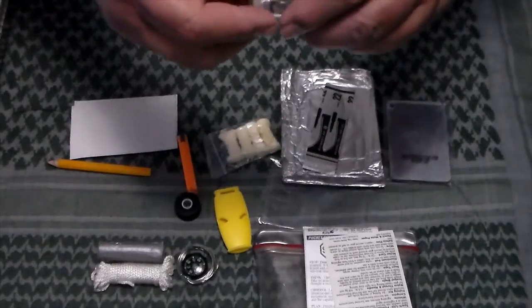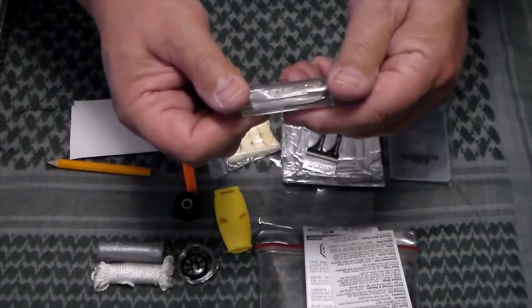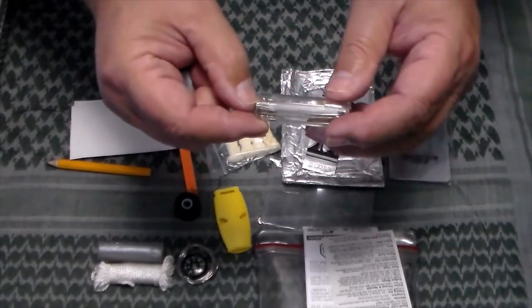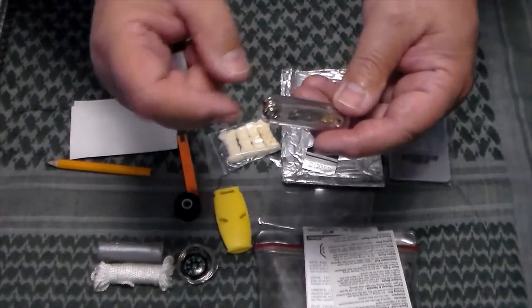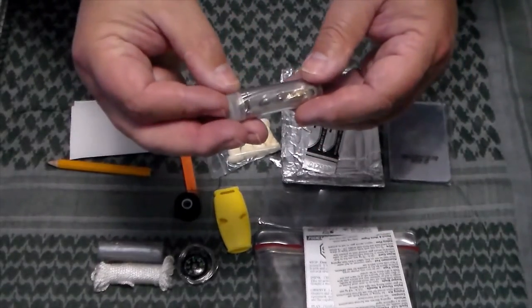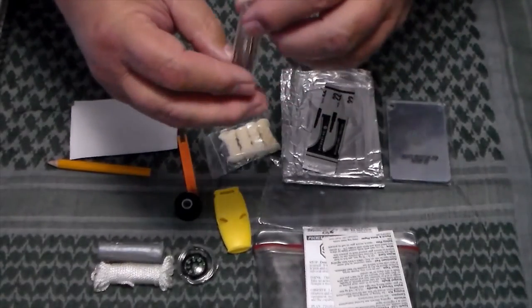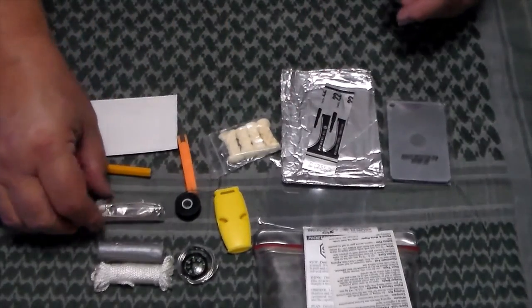And then we have the tube. In here, we've got a sewing needle, some fish hooks. I don't want to take them out, because it's kind of a pain to try and get everything back in. And some safety pins. But they're all in this plastic tube, just to make it easier to store them. And that's a handy little kit there.